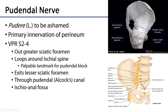The pudendal nerve is named from the Latin 'pudera,' which means to be ashamed, as the pudendal nerve is the primary innervation to the perineum — an area that historically isn't discussed openly in public very often or in polite conversation. Seeing as we are students of anatomy, we understand that there is no part of our body that we need to be ashamed of, much less the perineum. Nevertheless, this ancient name persists.